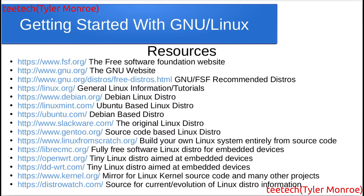For embedded devices, you have LibreCMC — a fully free software-based Linux distro for Wi-Fi routers and similar devices. OpenWRT is the same idea for Wi-Fi routers and small computers. DD-WRT as well — and both OpenWRT and DD-WRT can also run on full x86 hardware if you want.